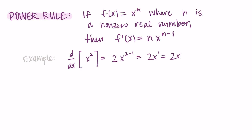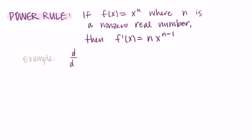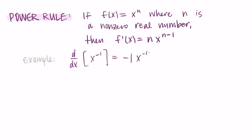For x cubed, the 3 comes in front and we decrease by one, giving 3x squared. For x — which is really x to the first power — the 1 comes down front and the exponent decreases by one, leaving x to the zero, which equals 1. So the derivative of x is 1. For x to the negative one: negative 1 comes in front, and the exponent decreases to negative 2, giving negative x to the negative second power.